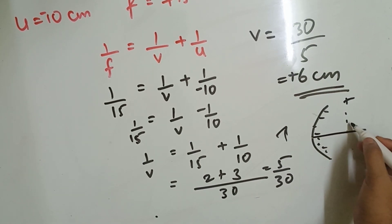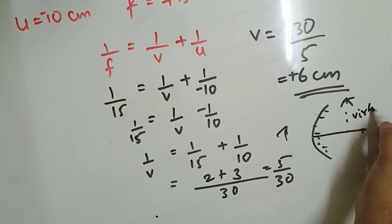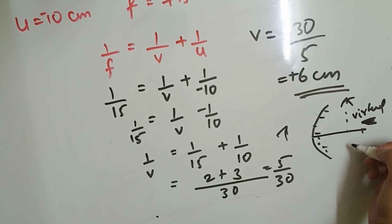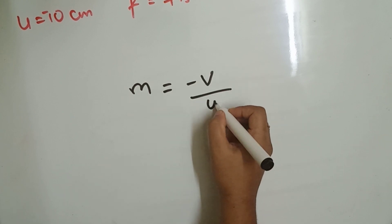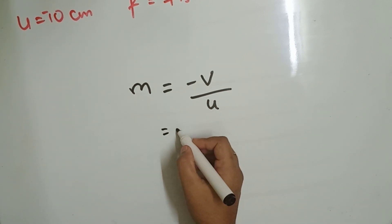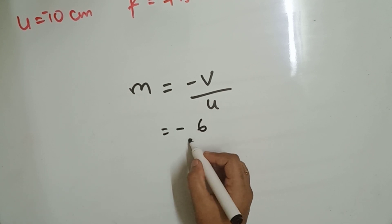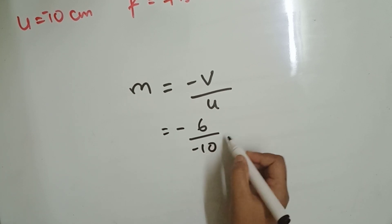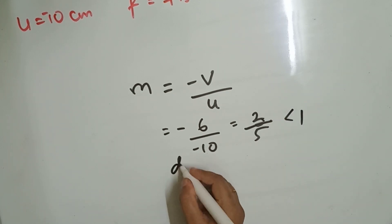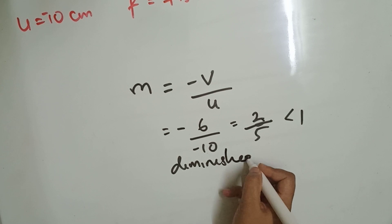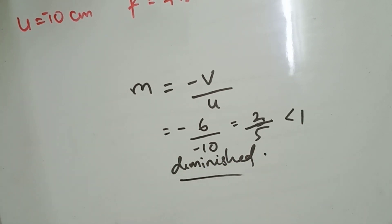v = +6 cm means the image lies to the right side of the mirror — behind the mirror — so it is a virtual image, and since it's virtual it is erect. Now finding magnification: m = −v/u = −6/(−10) = 3/5 = 0.6. Since magnification is less than 1, the image is diminished, meaning smaller than the object.